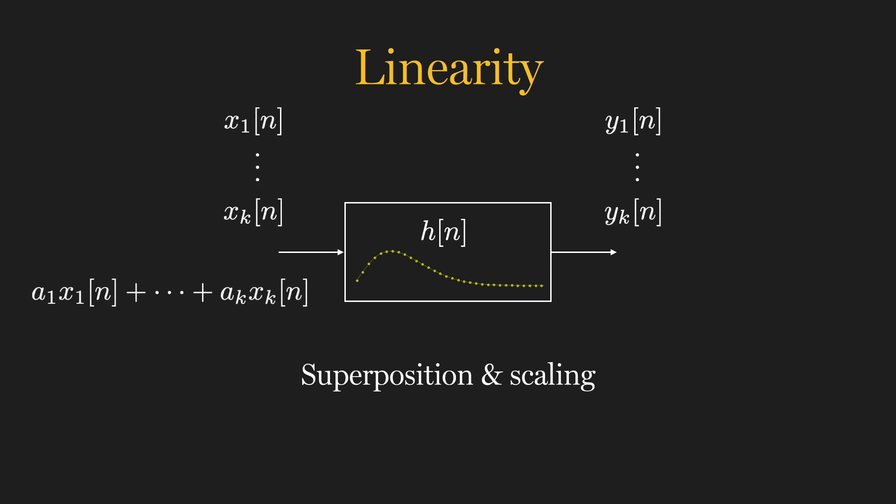One way to think about this is that if we already have the individual responses to x1 through xk, for any linear combination of those inputs, let's say 1.1 x2 plus 0.3 x5 plus 0.9 x8, we don't need to input this combination into the system to determine the output. We already know what it will be.